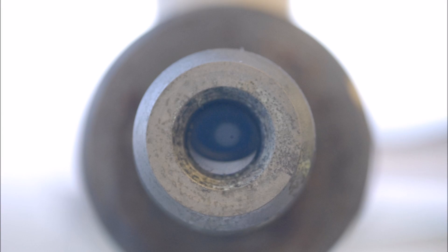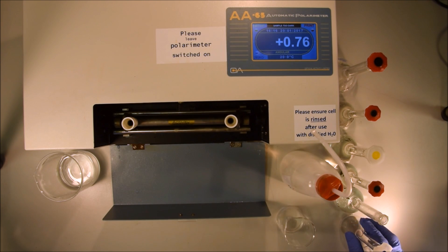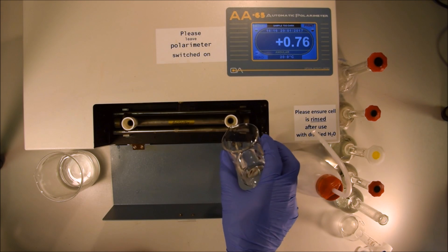The machine will start to say sample too dark and you'll have a bubble and it'll look something like that, and you won't be able to see the light coming through so the machine won't be able to make an accurate reading. If you have that, all you have to do is rock the cell gently from left to right, back and forth a few times until you see the bubble come out.